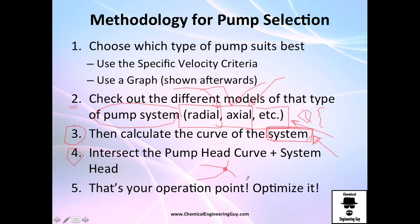Once you have that point, it's time to optimize it. For example, closing a gate valve can shift the system curve and give you better efficiency and lower power requirements. Finally, once you have your final operation point, get approval, buy the pump, install it, do some tests, and start operating.